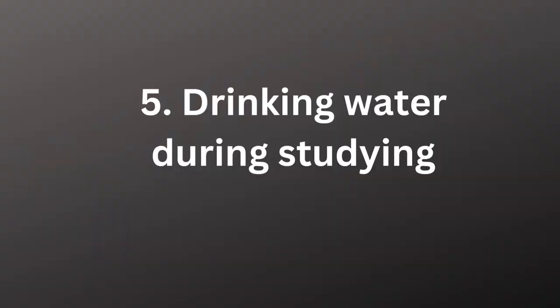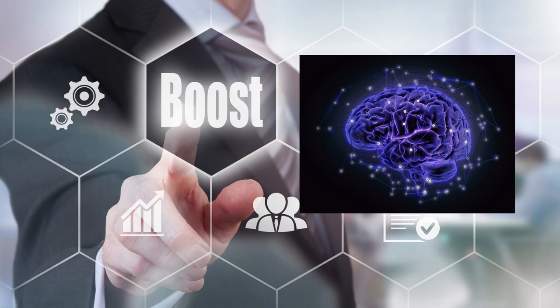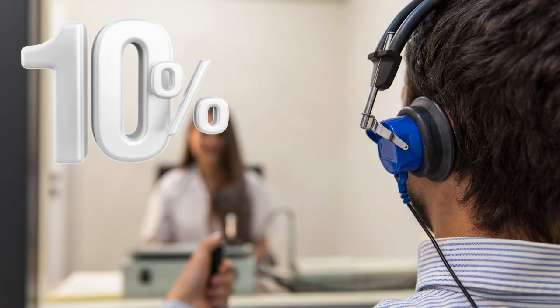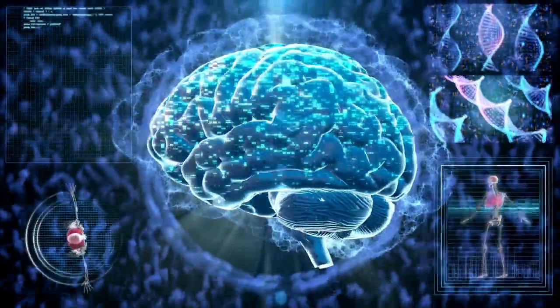5. Drinking Water During Studying. Hydration helps to increase your concentration. Did you know drinking while studying can boost your brain power? A 2012 study found that drinking during a test could have a significant positive outcome on your grades — college students who drank during exams performed 10% better. Water helps your brain cells communicate with each other, which is essential when studying.